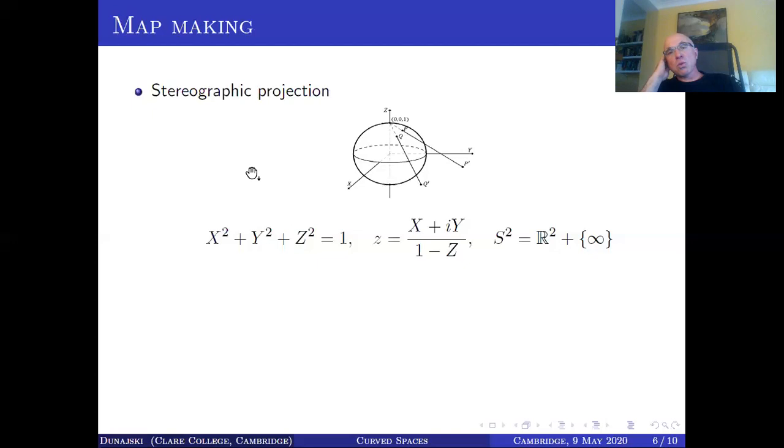Now, this procedure wouldn't be any good if you wanted to make a map which represents, which fairly accurately represents distances. And that's because the regions close to the North Pole are mapped into huge regions of infinite area on the plane. On the other hand, regions close to the South Pole are mapped into regions with tiny areas. So, there are better ways, other ways of making maps.